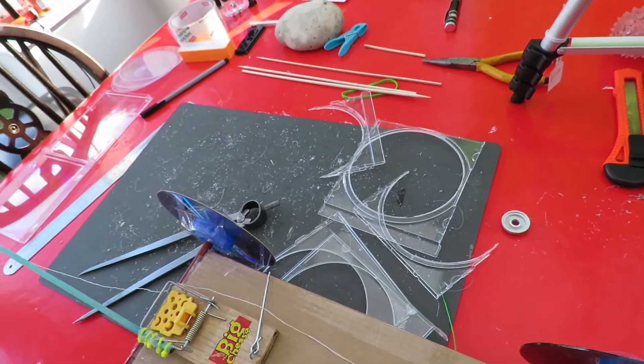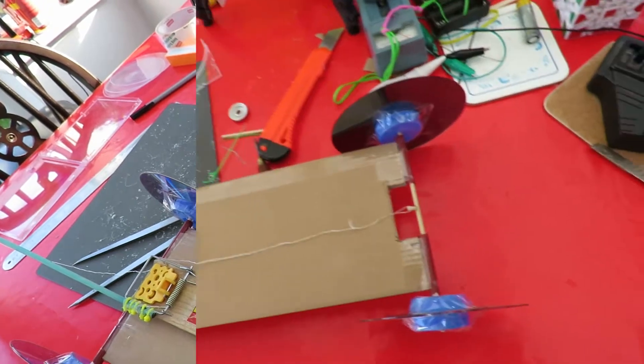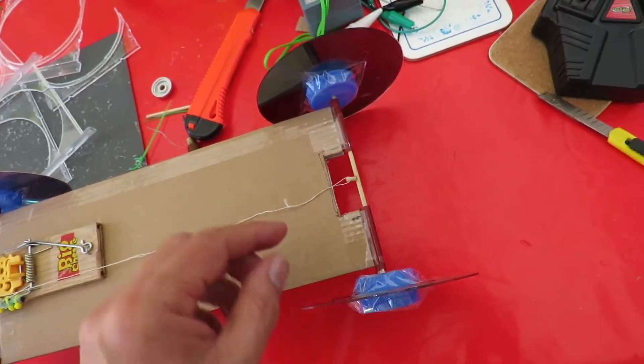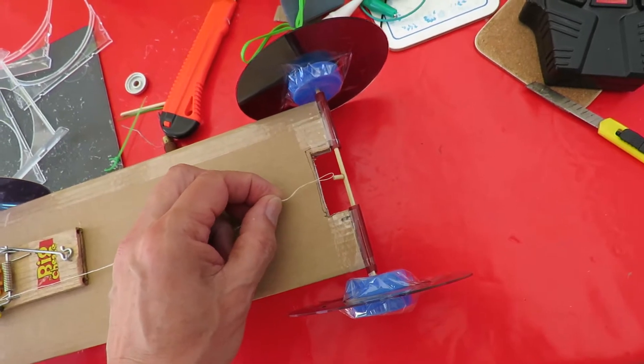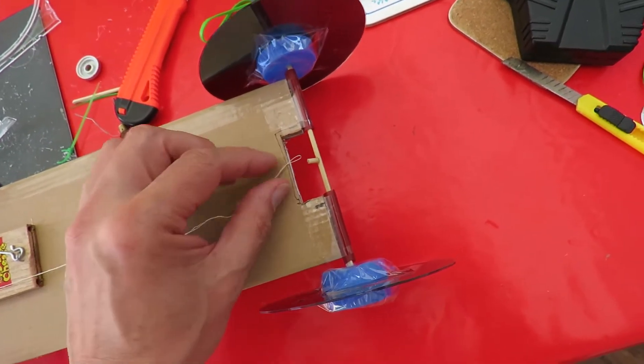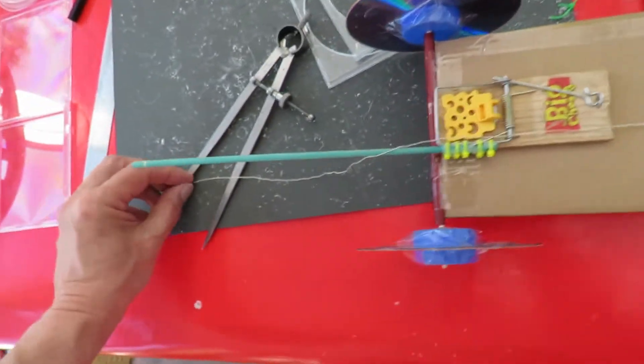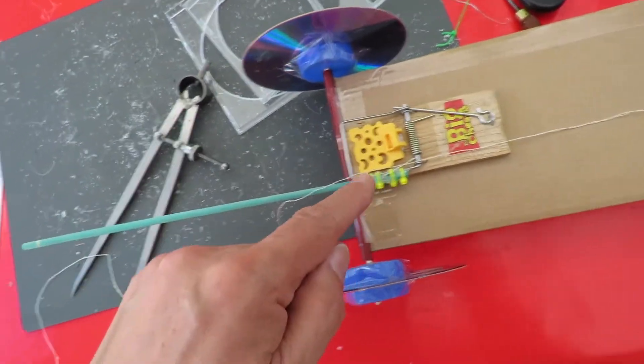Probably the most important measurement to get right here is the string has got to come off the axle when the arm is fully at rest.